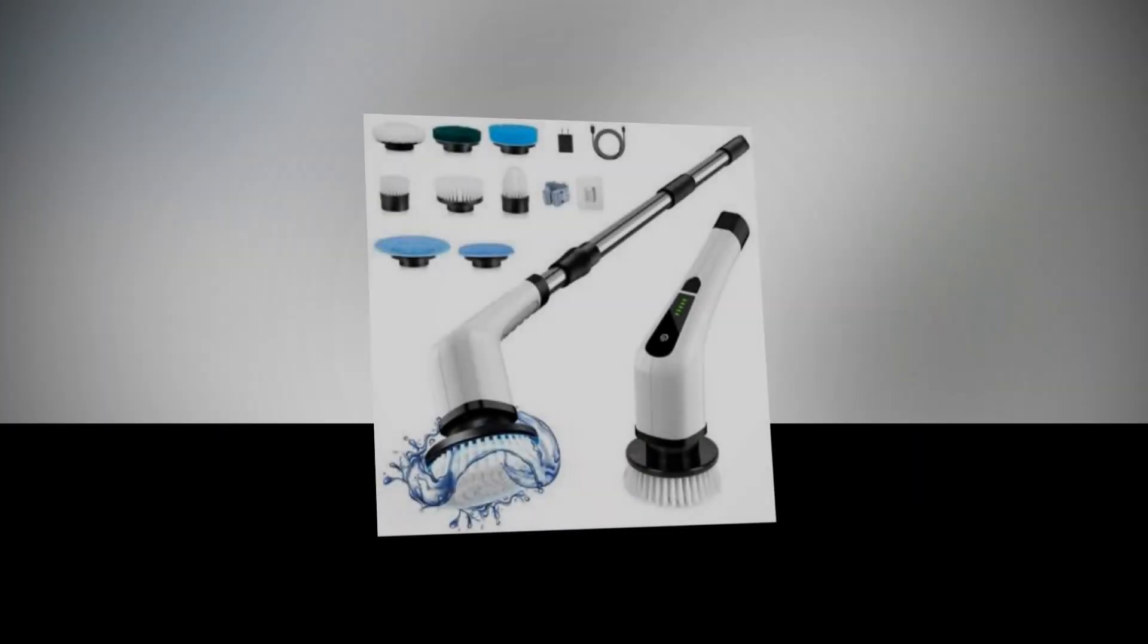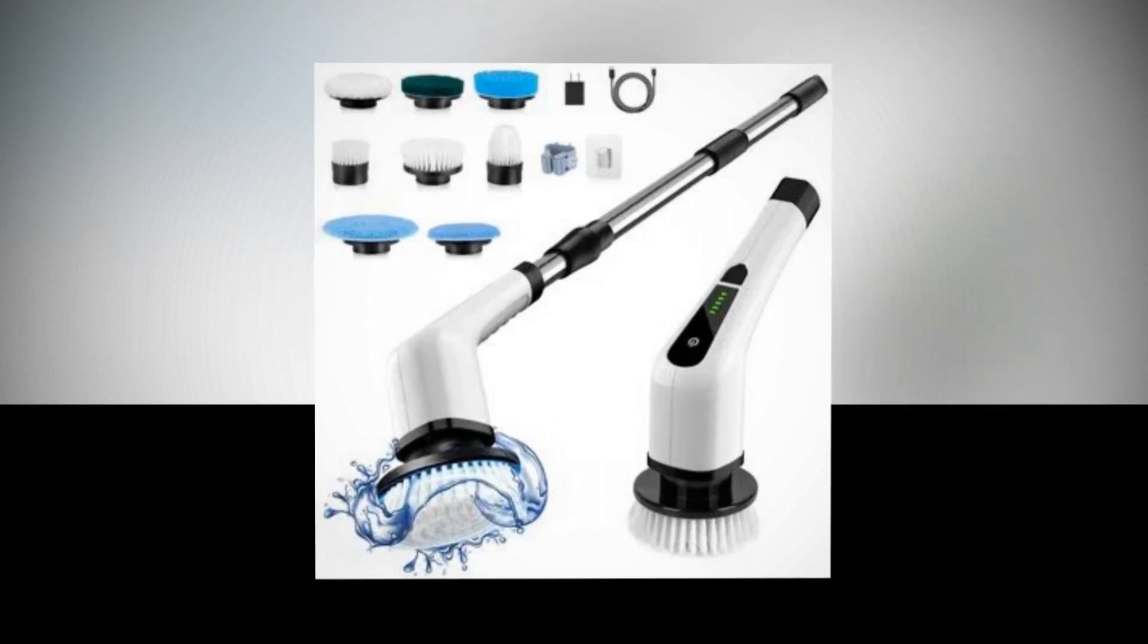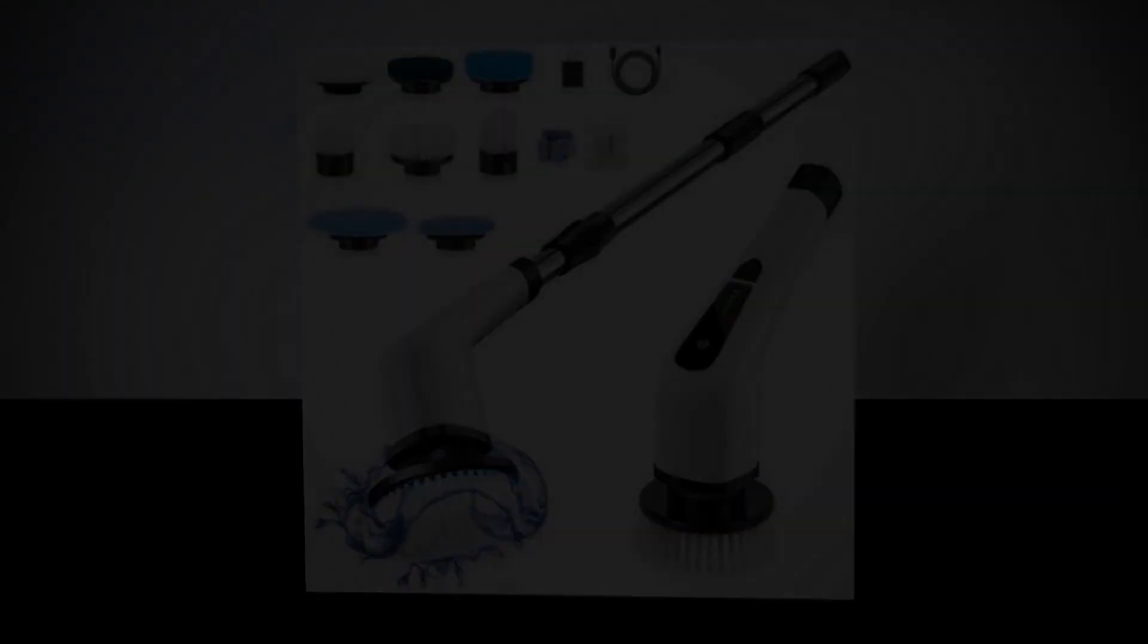Simply flip the AquaCare handle to activate the high-pressure power wash. Use point jet to blast away stubborn dirt or wide fan to quickly rinse large surfaces.